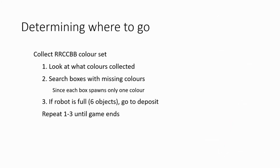We move on to our strategy for deciding where to go. We prioritise collecting the red-cyan-black colour set, since each set gives us 90 additional points. To do so, we look at what colours have been collected and only search boxes with colours we are missing. Once the robot is full, we go to the deposit zone. This process is repeated until the game ends.